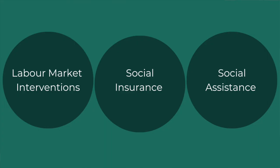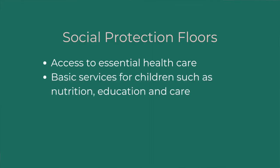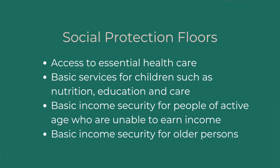Social protection floors are the minimum or basic levels of support that governments need to provide. The ILO has four major categories: first, access to essential health care; second, basic security of services for children including nutrition, education, and care; third, basic income security for people of an active age who are unable to earn a sufficient income, particularly in cases of sickness, unemployment, maternity, or disability; and fourth, basic income security for older persons who are no longer of working age.